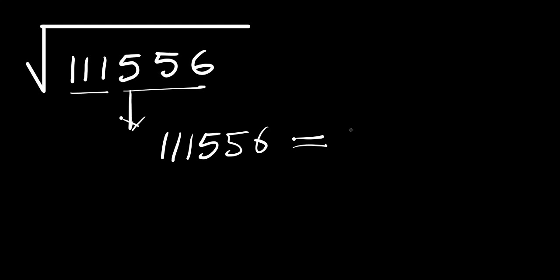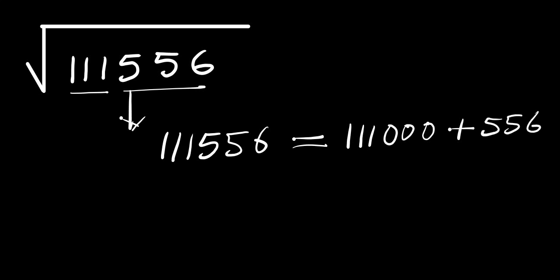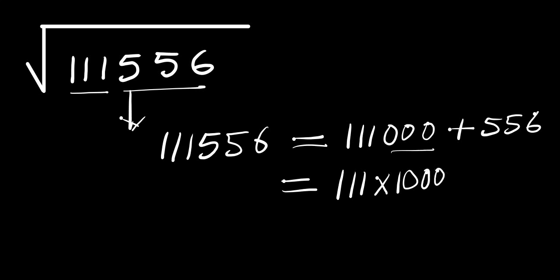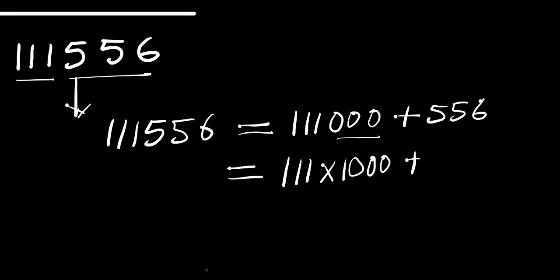We can write 111556 as 111000 plus 556, and further as 111 times 1000 plus 556. Then instead of 556 we write 555 plus 1, and instead of 1000 we write 999 plus 1.